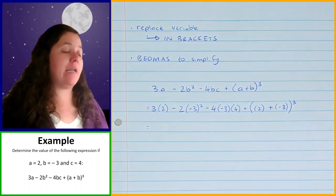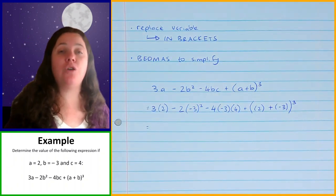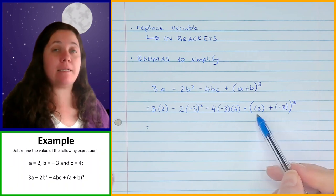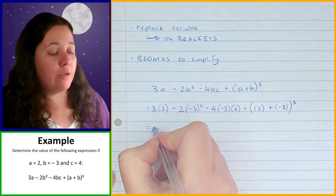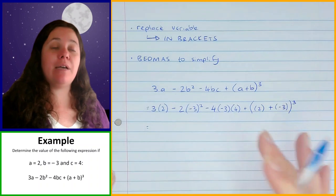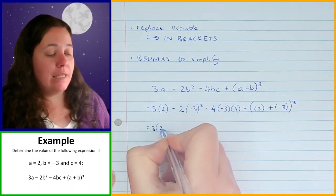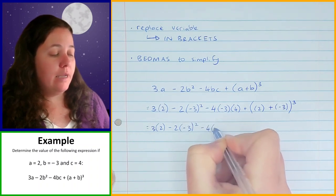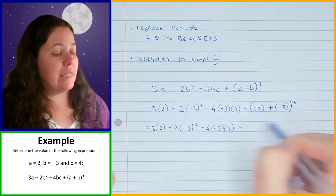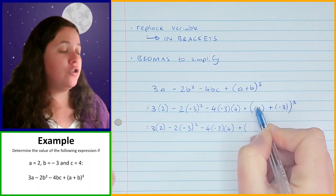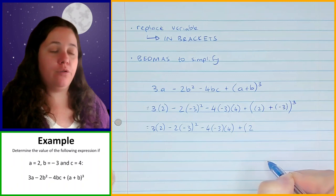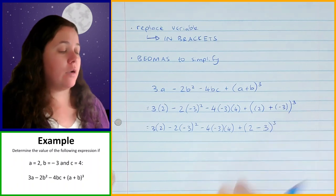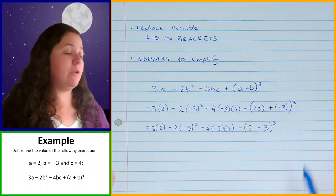Now I'm going to use BEDMAS to simplify. The first step is to simplify anything inside brackets. I need to get rid of the brackets that are inside the bigger brackets first — everything else stays as it is for now. So I've got 3 times 2, minus 2 times negative 3 squared, minus 4 times negative 3 times 4, plus — and inside the big brackets there's nothing to do to the 2, so it's just 2 plus negative 3, which is minus 3, cubed.